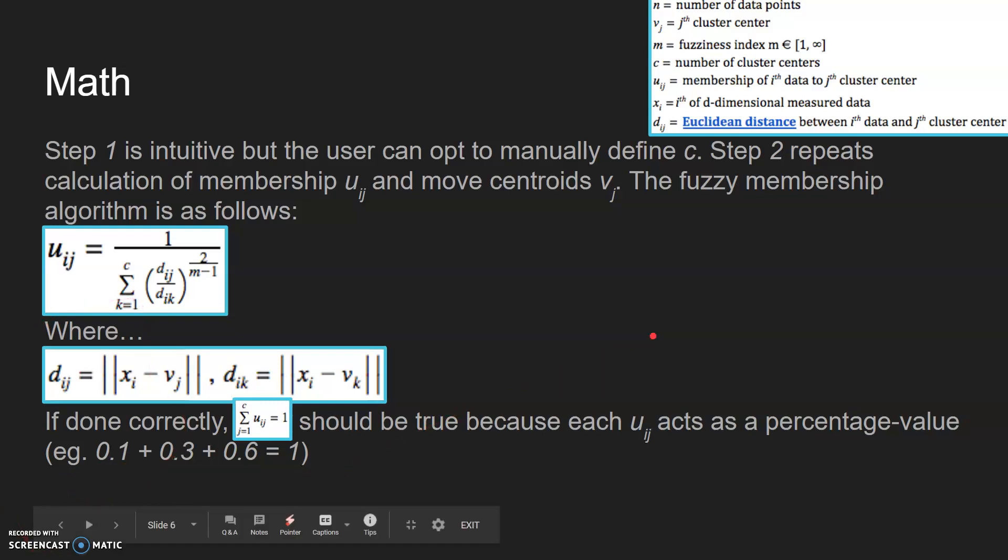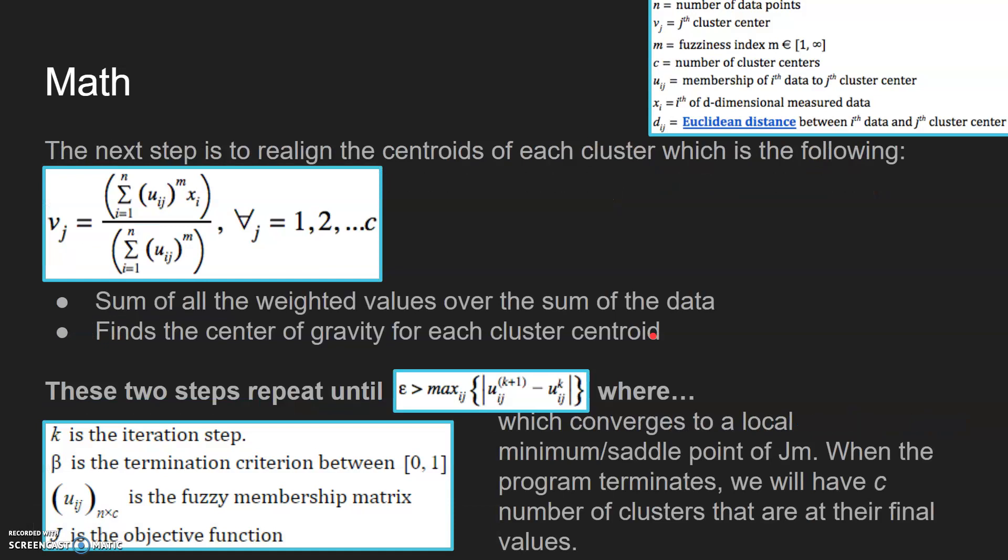The next step is to realign the centroid for each cluster, which is the following: VJ equals the distance of all the membership values times the actual value. So if a value is not really directly tied too much to this certain cluster, then its UIJ could be zero and it has no significance to changing the values.